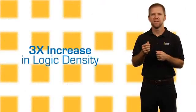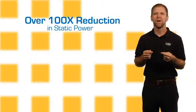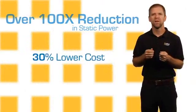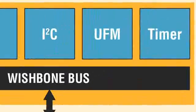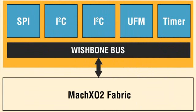Compared to its popular predecessor, the Mach XO, the Mach XO2 family delivers a 3x increase in logic density, 10x increase in memory, over 100x reduction in static power, and up to 30% lower cost. In addition, several popular functions used in low-density applications, such as user flash memory, I2C, SPI, and timer counters have been hardened into the Mach XO2 devices, providing designers a do-it-all PLD for high-volume, cost-sensitive designs.